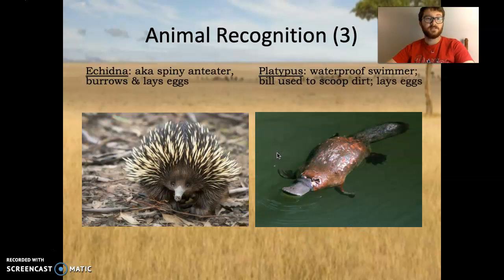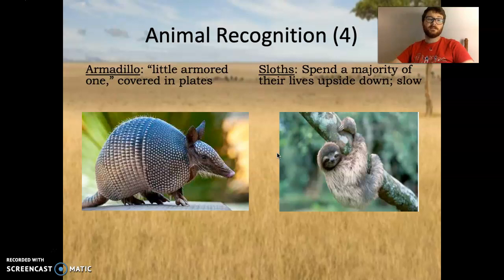You have the echidna, the spiny anteater, as it's better known — burrows, lays eggs, one of the only egg-laying mammals along with the platypus. The platypus is a waterproof swimmer with a bill used to scoop dirt, and it also lays eggs. You have the armadillo, meaning 'little armored one' in Spanish, covered in plates. Sloths, which you should be able to pretty easily identify, spend a majority of their lives upside down. Pretty slow creatures — I think they move about 7 feet an hour.